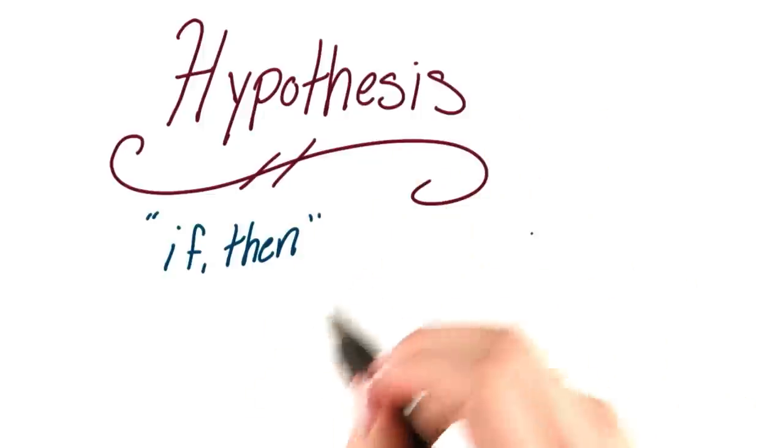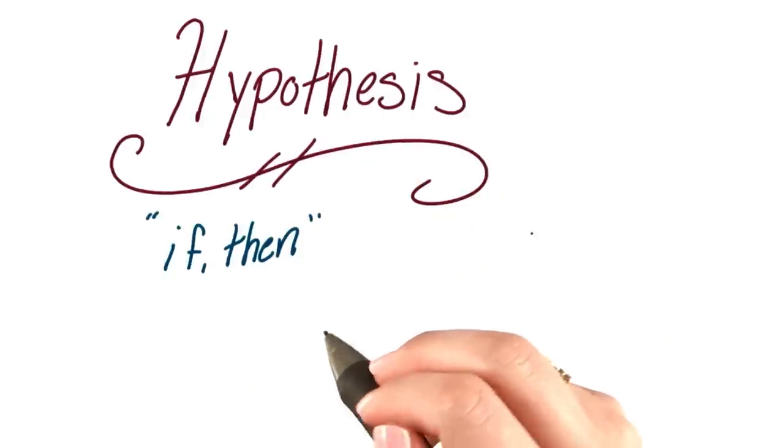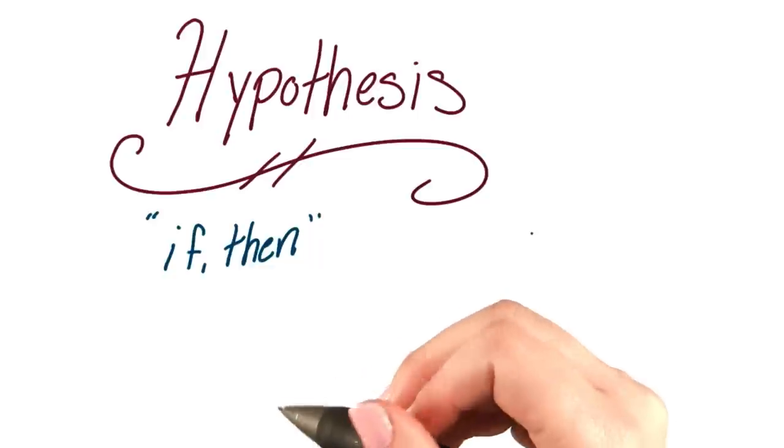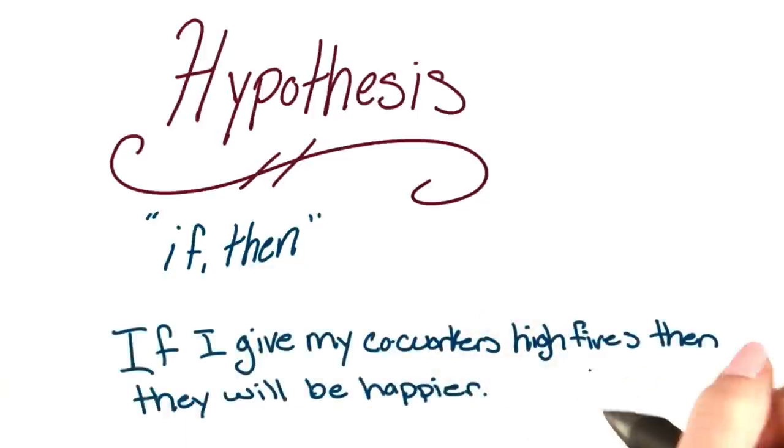So for my high five example, I had to come up with a hypothesis, which is like an if-then statement. It's a proposed explanation for a phenomenon. I think that if I give my coworkers high fives, then they will be happier.